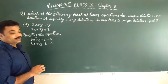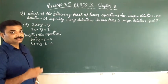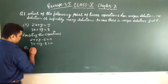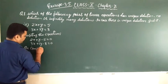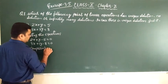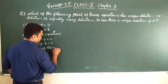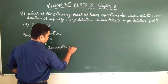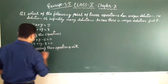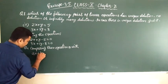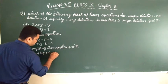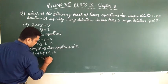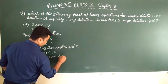Now, we will compare these equations with the general equations. On comparing these equations with a1x plus b1y plus c1 is equal to 0 and a2x plus b2y plus c2 is equal to 0 respectively.